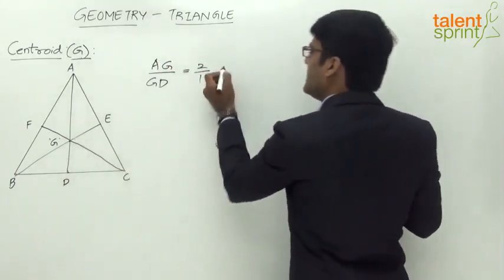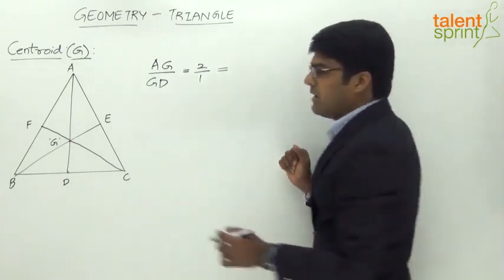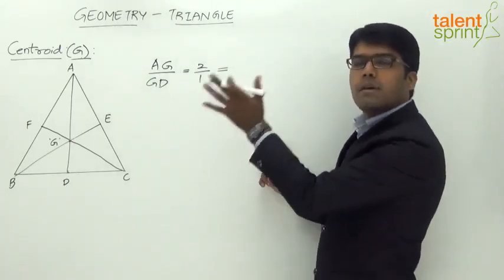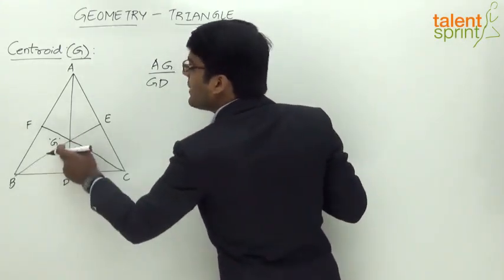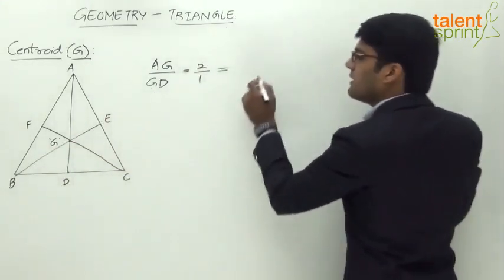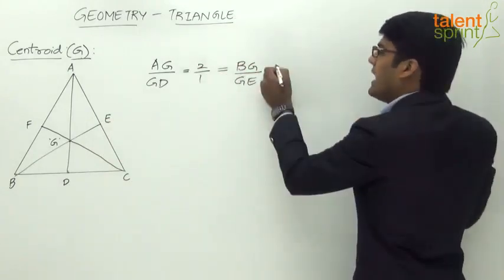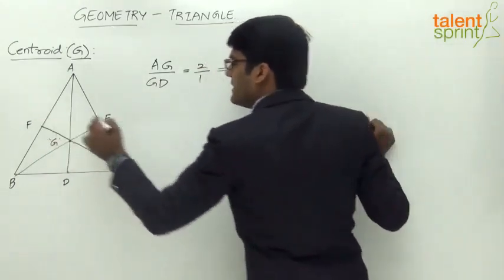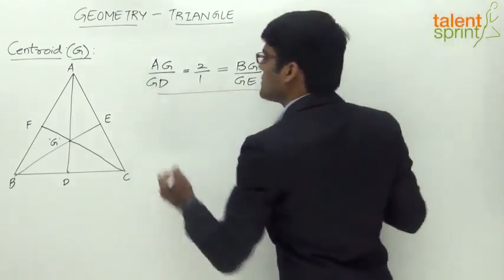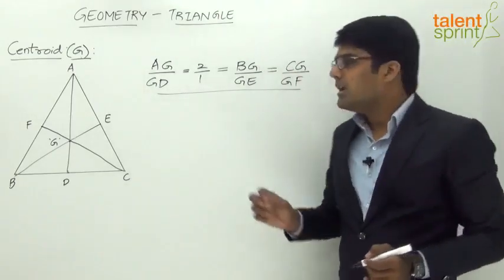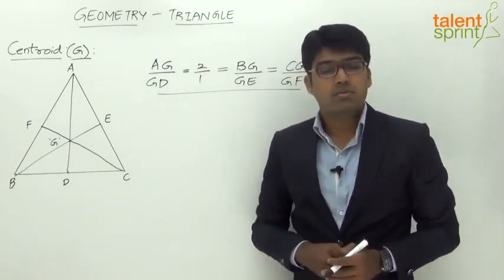This ratio applies to all three medians. The remaining two medians are also divided by the centroid in the ratio of 2:1 — two parts on the vertex side, one part on the base side. For median BE: BG/GE = 2:1. Similarly for the third median CF: CG/GF = 2:1. So the important conclusion is that the centroid always divides any median in the ratio of 2:1.